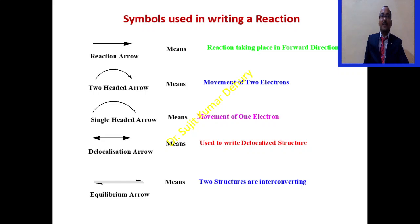It will be interesting to know what are the symbols used in writing a reaction. The first one is called the reaction arrow, which means the reaction takes place in forward direction. Similarly, this two-headed curved arrow suggests the direction in which the bond is breaking and indicates the movement of two electrons takes place.